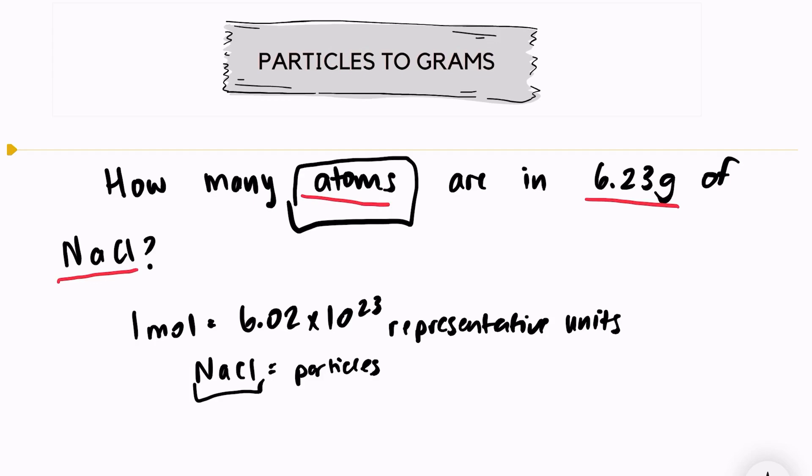So not only do I need both of my unit conversions of one mole equals 6.02 times 10 to the 23rd particles, and one mole equals molar mass, I also need to know how many atoms are in this sample.